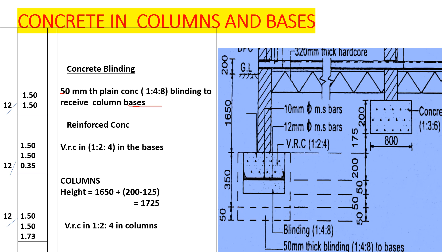Now we proceed to the column. The height of the column runs from the top of the base up to the bottom of the slab. That is 1650mm upward, plus an extension of 200mm, minus the slab thickness of 125mm, leaving 75mm. So the total column height is 1650 plus 75, giving us 1725mm, or 1.725 metres. We book it as: 1.5 by 1.5 by 1.725, for 12 columns — VRC mix 1:2:4 in the columns.